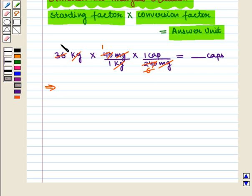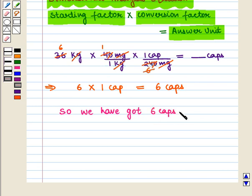6 times 6 is 36. So here we have 6 times 1 capsule, which equals 6 capsules. So we have got 6 capsules per day.